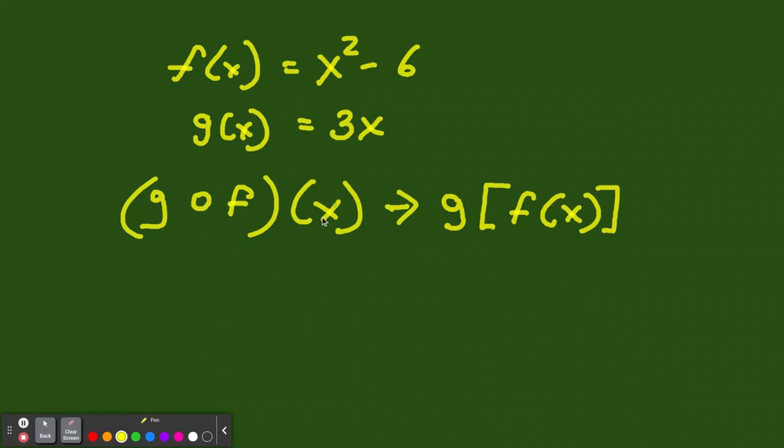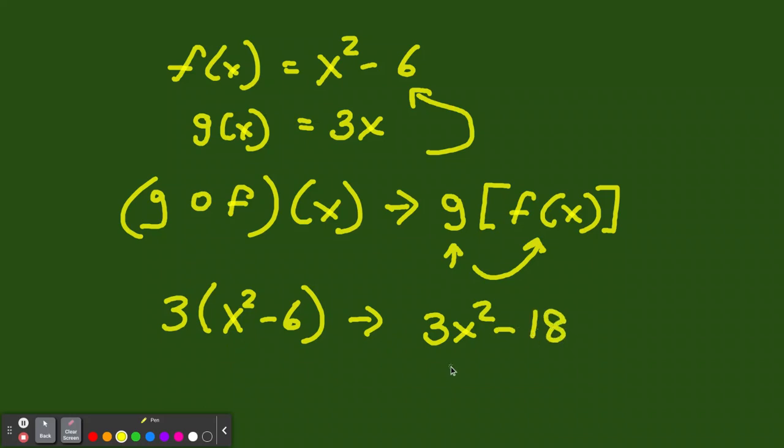So we know that the g is 3. And instead of using x, we're going to use f of x right there. So it'll be 3. And in parentheses, we'll have x squared minus 6. Because that's what f of x is. It says it right here. We have the g, and then we have f of x. So if we distribute this, we're going to have 3x squared minus 18. So when we compose using f of x and g of x with g first, we're going to get this answer. Let's do another one so you get the hang of it.